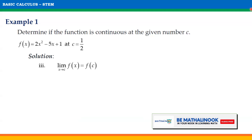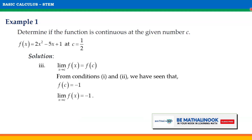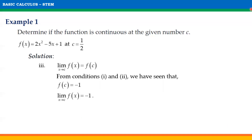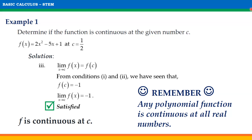For the third condition, the limit of f(x) as x approaches C should equal f(C). From conditions 1 and 2, we have seen that f(C) = −1 and the limit of f(x) as x approaches C is also −1. Therefore, f(C) equals the limit of f(x), and condition 3 is satisfied. With all three conditions satisfied, we conclude that f is continuous at C. Remember that any polynomial function is continuous at all real numbers, since the limit at every real number C is evaluated using direct substitution.